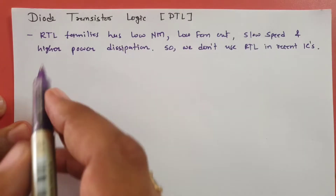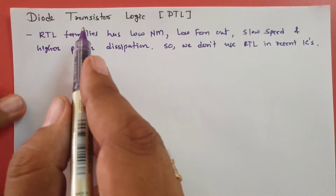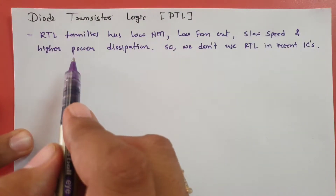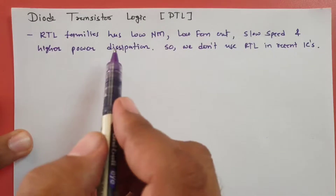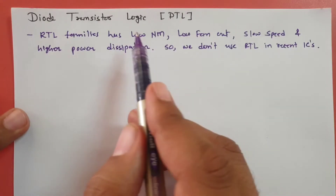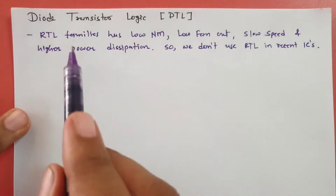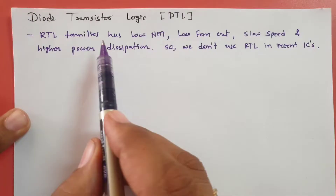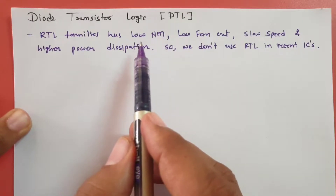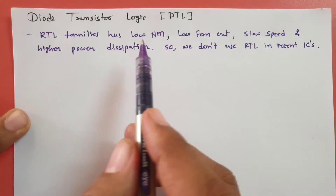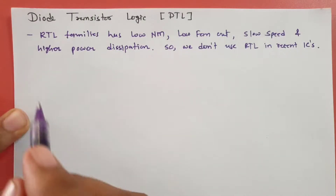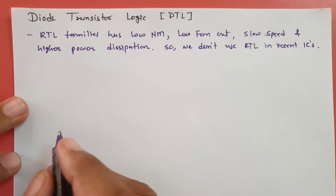Diode transistor logic has improved fan out and improved noise margin compared to RTL. At the end of this video, it will be shown how DTL provides these improvements, and because of that we use diode transistor logic.